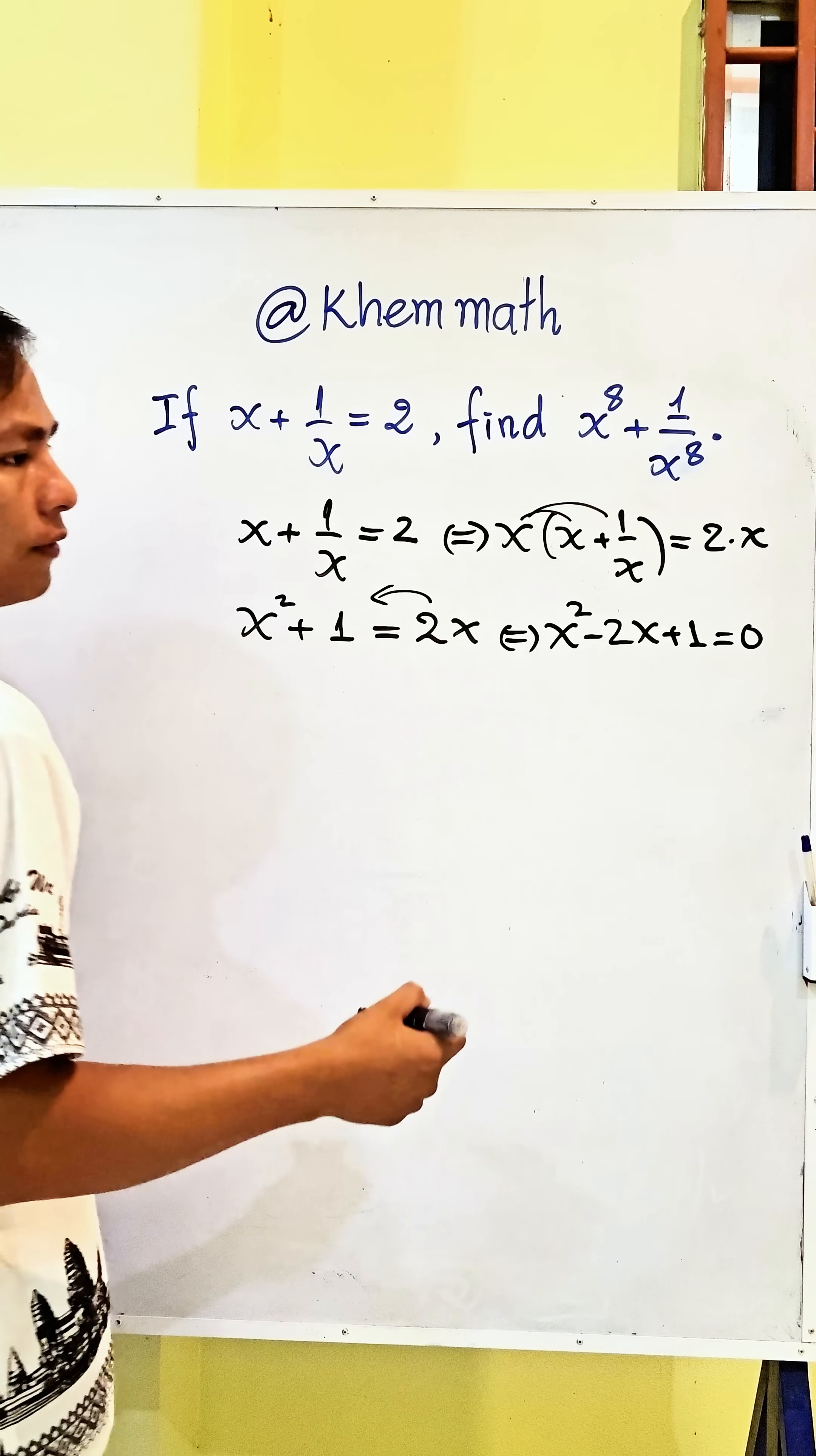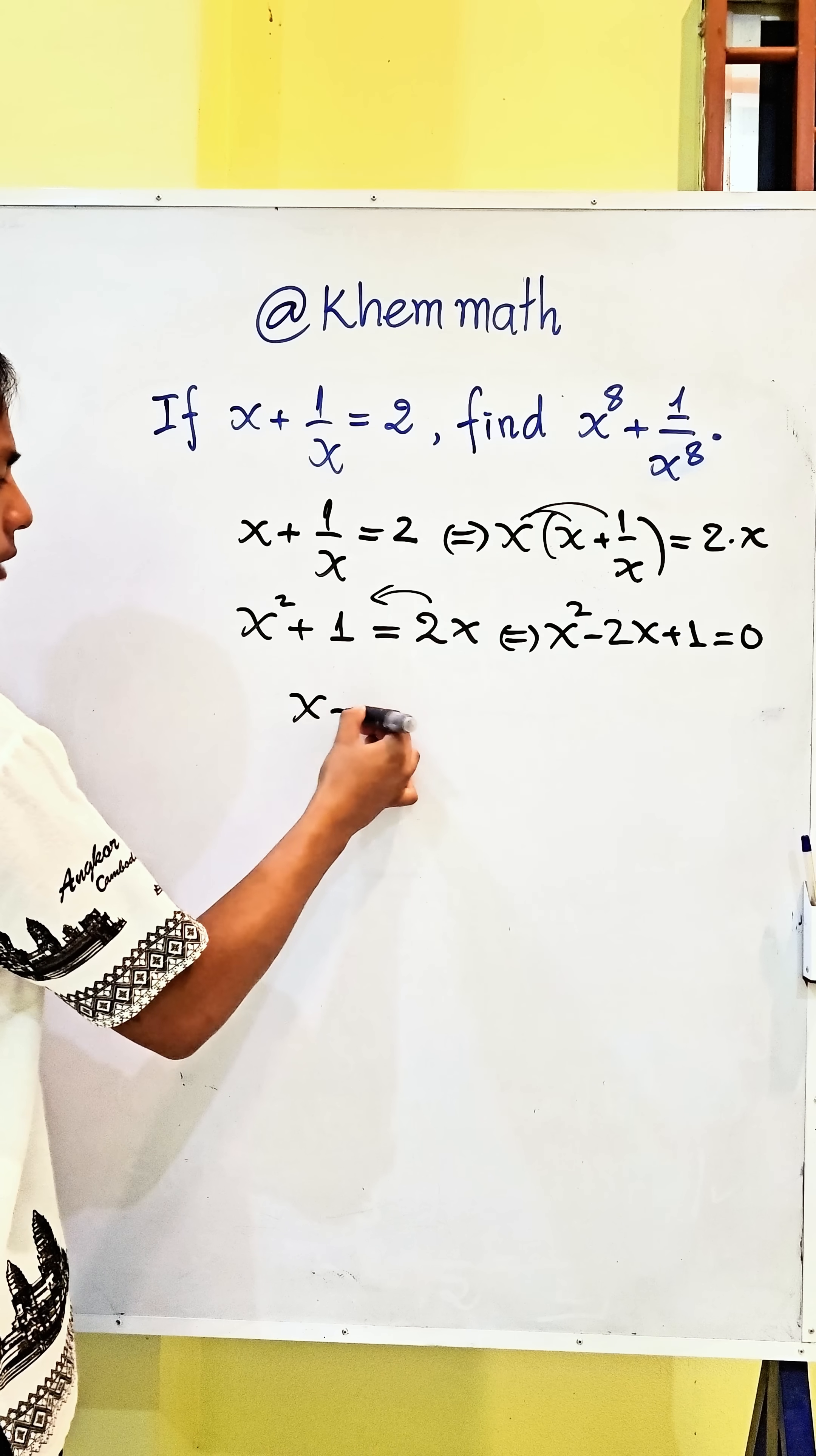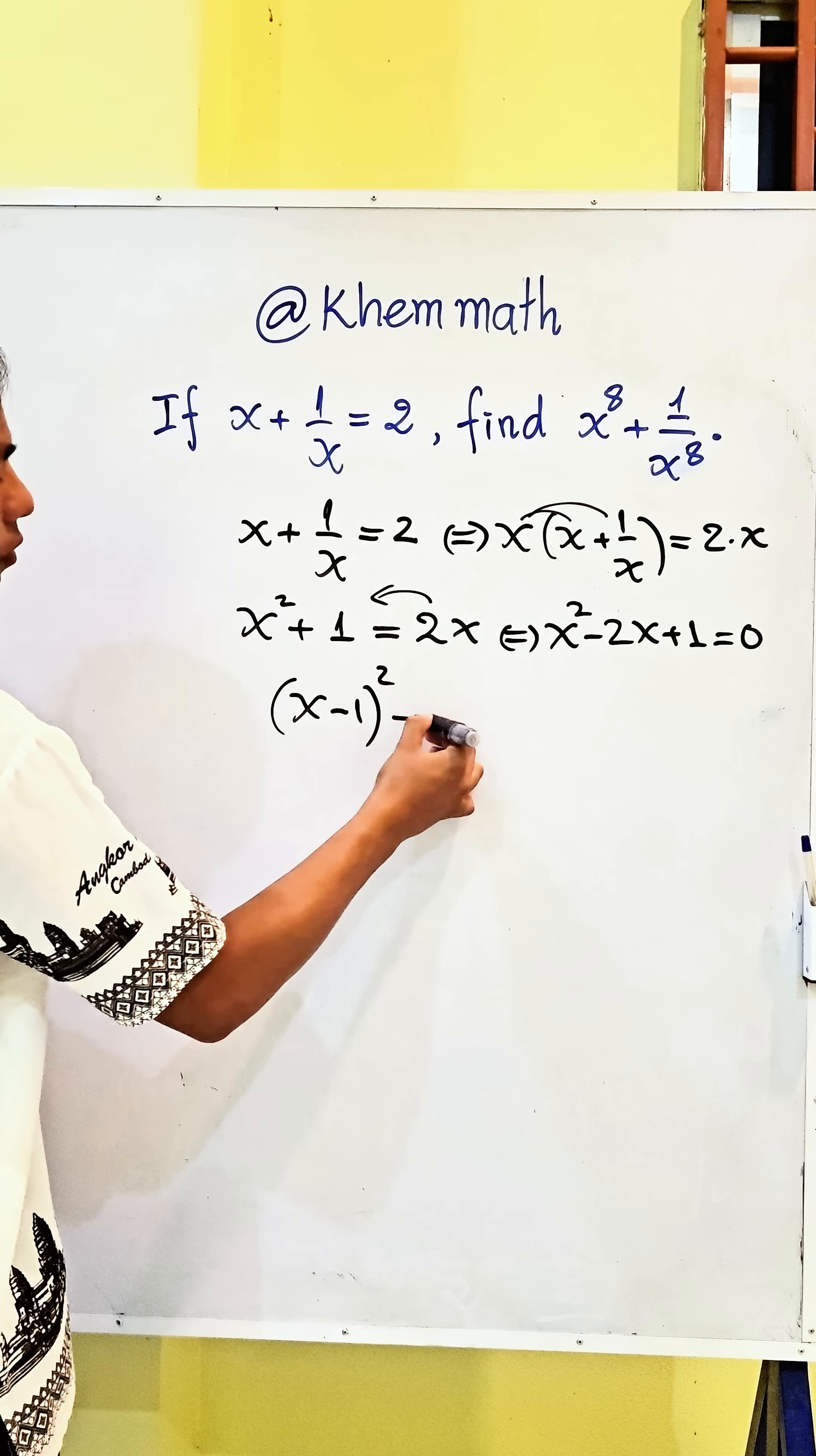And here we'll factor. We get x minus 1 all squared equals 0.